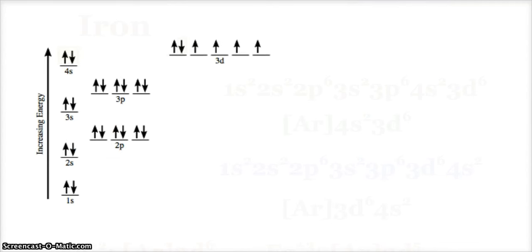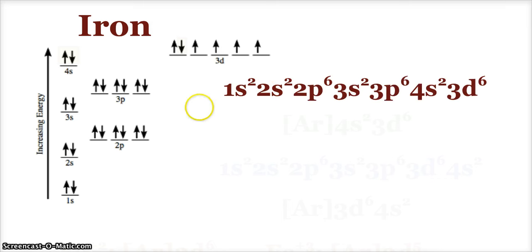The electron configuration of iron: 1s² 2s² 2p⁶ 3s² 3p⁶ 4s² 3d⁶. That gets a little tiresome, and since electron configurations build off of each other, we can recognize a shortcut—the noble gas shortcut.